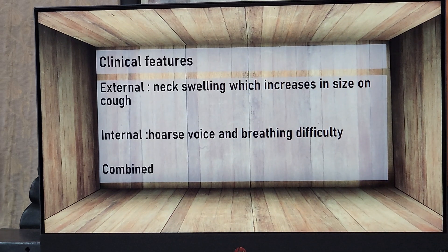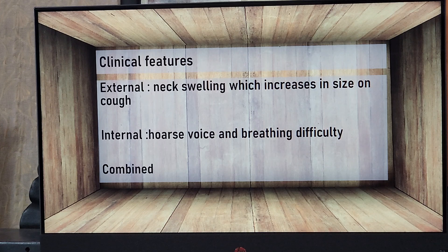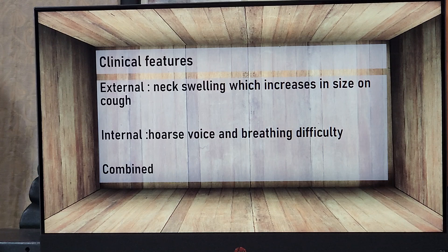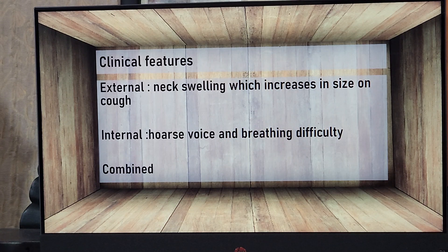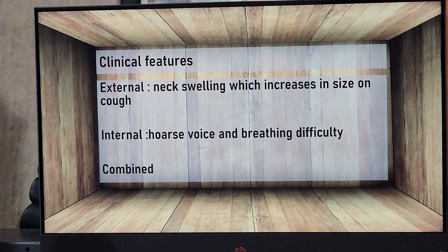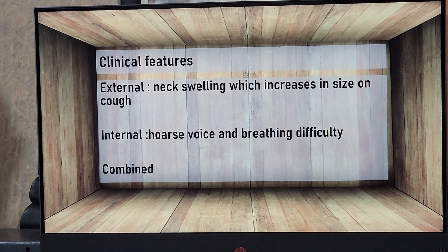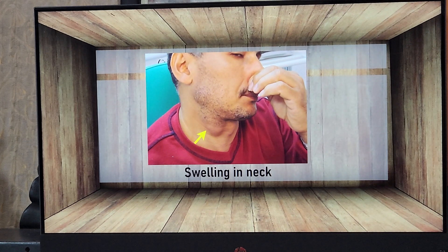Patients with external laryngocele present with a noticeable swelling that slowly increases in size whenever they strain, as in glass blowers and trumpet blowers. As soon as they stop blowing, the neck swelling disappears. In case of internal laryngocele, the same thing happens but instead of a neck swelling, they have a change of voice, and if neglected it can proceed to breathing difficulty.